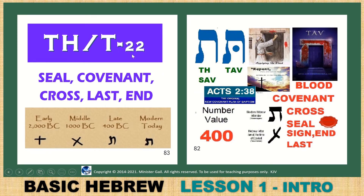Tav — T and TH, the 22nd letter. Seal and covenant, cross, last, end. It looks like a cross — X marks the spot — and today it looks like this. The blood over the door, the Tav. When there is a dagesh, a dot, it is Tav; when there is no dot it is TH. That means blood, covenant, cross, seal, sign, end, and last. The value of 400. The ancient symbol looked like a cross, and the modern symbol looks like this — the blood over the door. Acts 2:38 is the last and original covenant plan of salvation and baptism for all Jews, Gentiles, Muslims, Asians — of all cultures and backgrounds. Acts 2:38 was the last covenant for salvation before the end of the world.